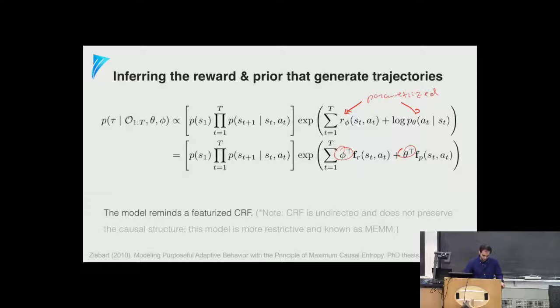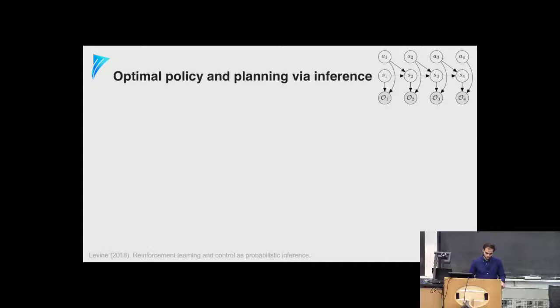In Brian Ziebart's PhD thesis, this construction is derived from the Max Entropy Principle — without assuming a specific distributional form. Here we jump ahead and assume the exponential form with reward or features multiplied by parameters. We'll return to the standard formulation where the reward is given, focusing on the RL setup rather than the inverse setup.